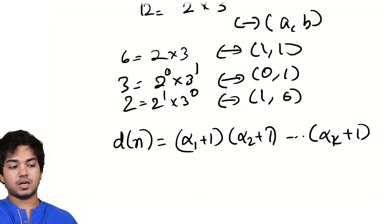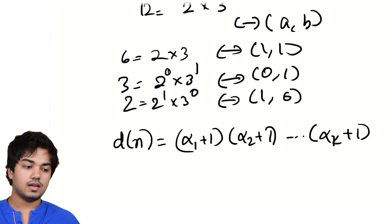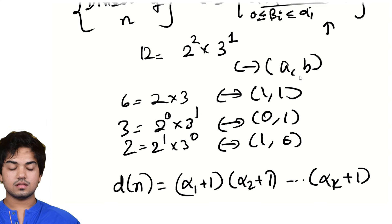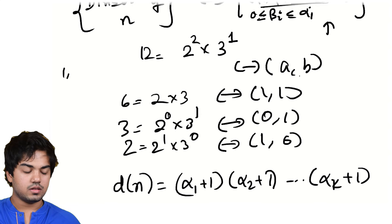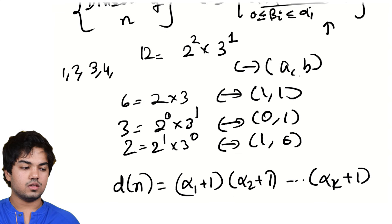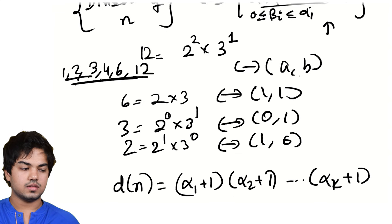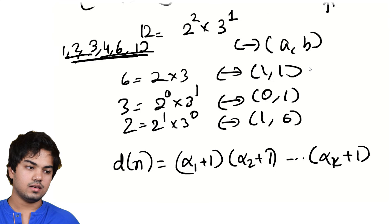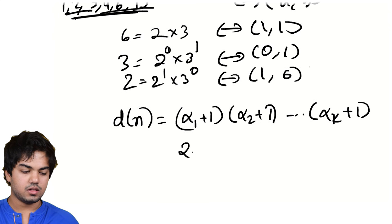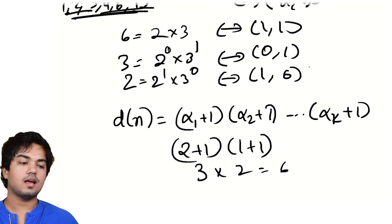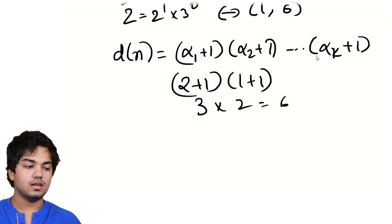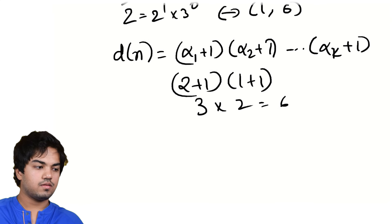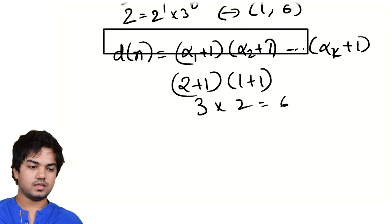And you can verify this, you know, plug in n equals 12. And you can see that the number of divisors of 12, which is how much? One, two, three, four, six, and 12. How many is that? Three plus three, six. And what is two plus one times one plus one, three times two, also six. And we also have done a proof. So that's a nice concrete formula for the number of divisors.